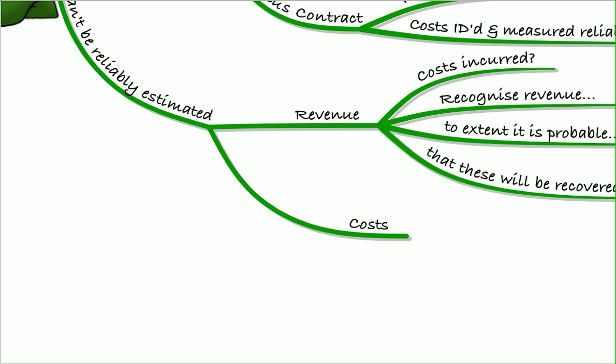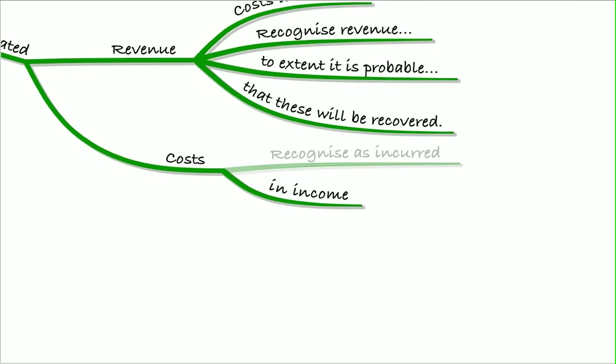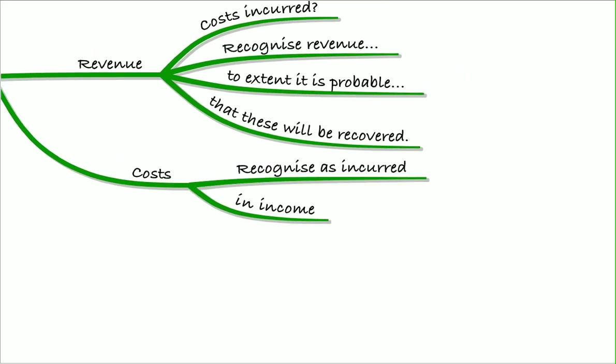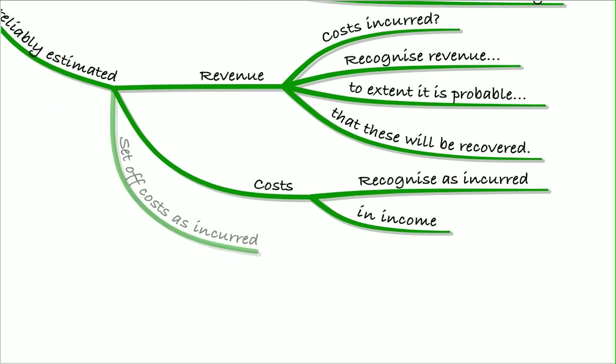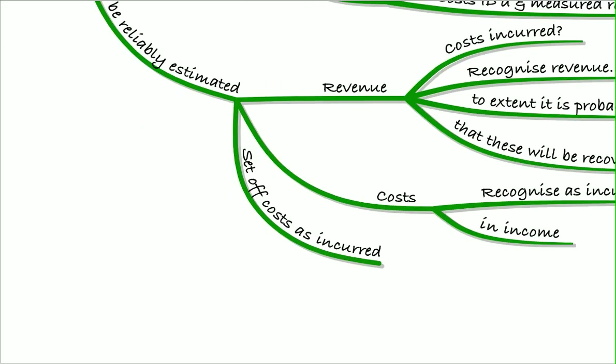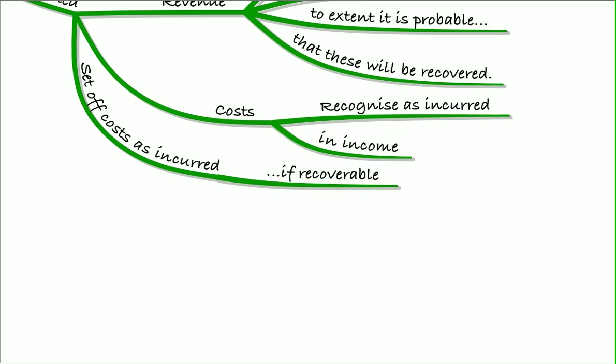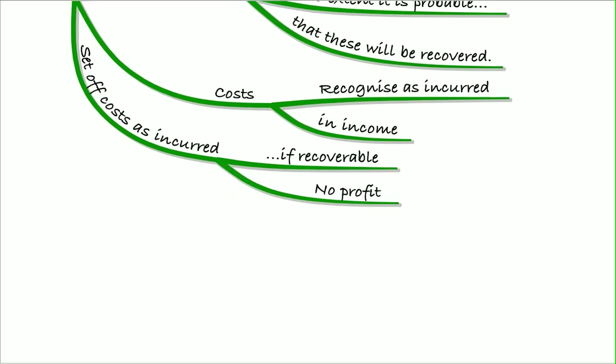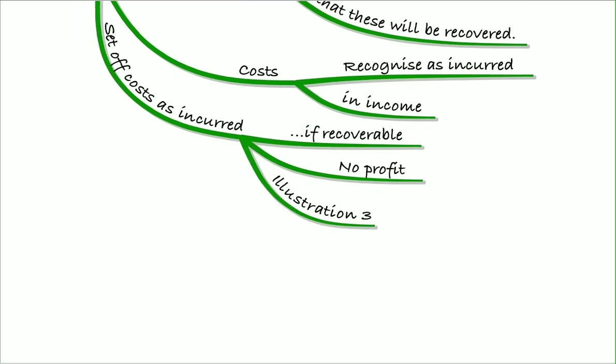So the costs will be recognized as incurred in income and we'll recognize enough revenue to write off those costs and not make any profit. So set off the costs as they're incurred if they're recoverable and no profit is recognized. And we did that in Illustration 3.